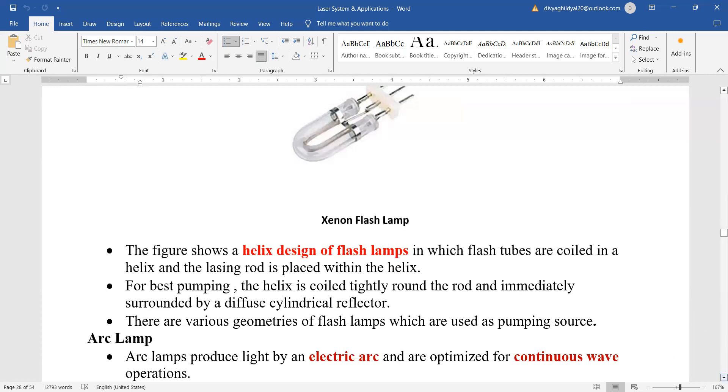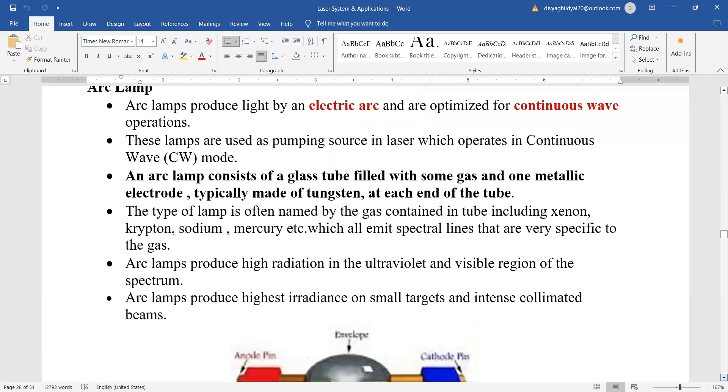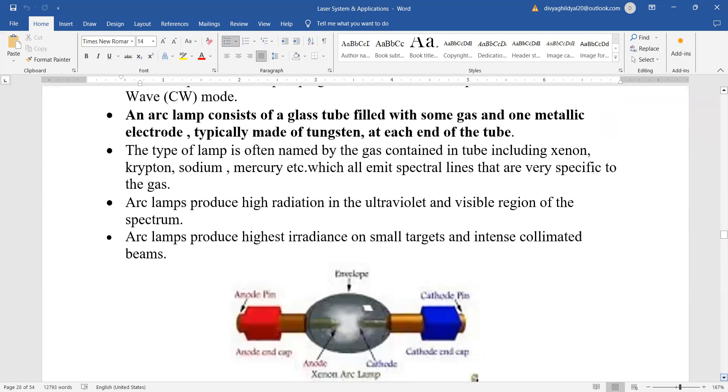Arc lamps. Here, the lamps produce light by an electric arc and are optimized for continuous wave operation. The arc lamp consists of a glass tube. As you can see here, it is filled with some gas and one metallic electrode which is made of tungsten. The type of lamp is often named by the gas which you are going to fill in the tube. Suppose it is a xenon gas you are filling or a krypton gas you are filling.